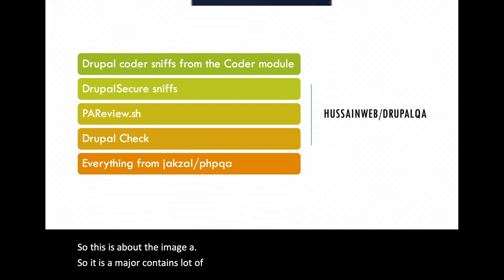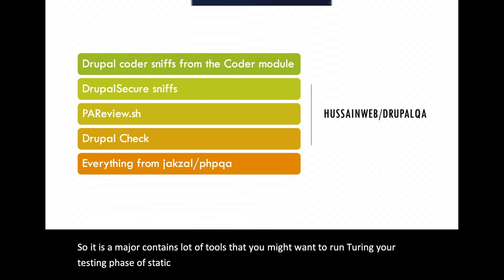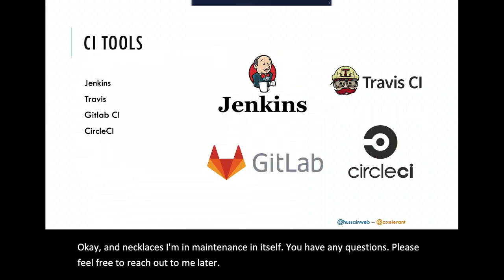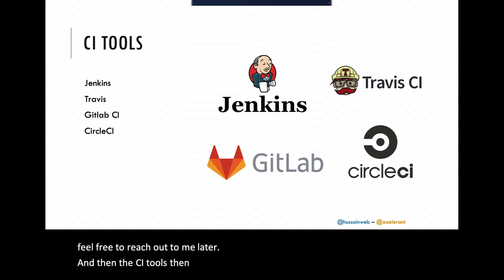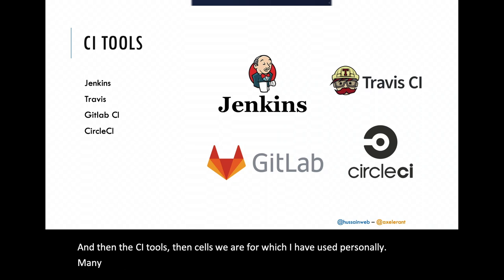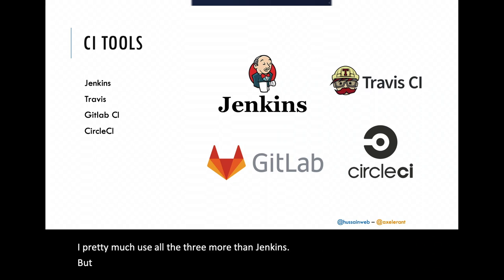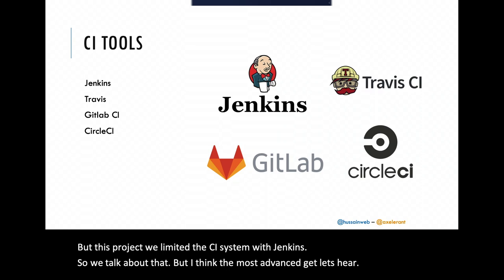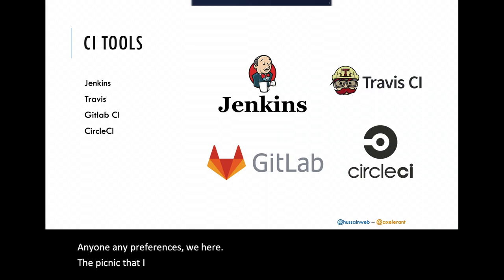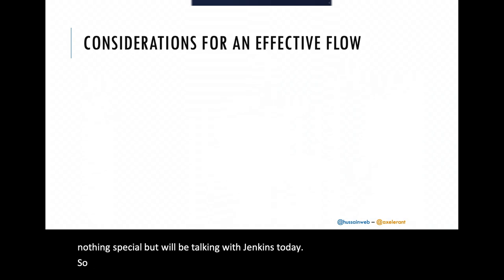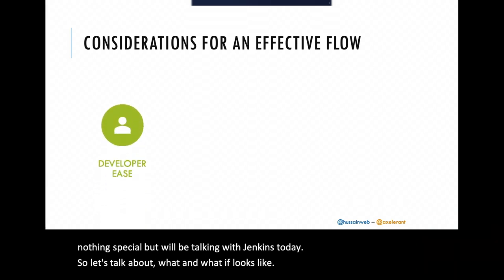So this image contains a lot of tools you might want to run during testing or static code analysis phases. I maintain this image, so feel free to reach out if you have questions. Now, for CI tools themselves — there are four I've used personally: Jenkins, GitLab CI, CircleCI, and one other. Today we're mainly talking about Jenkins because that's what we used for this project, although I've probably used GitLab CI the most overall. Does anyone have a preference?